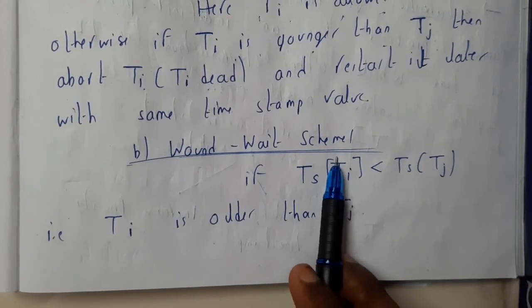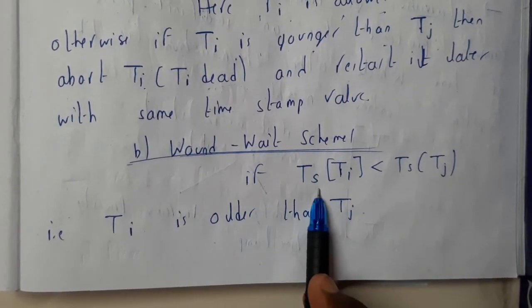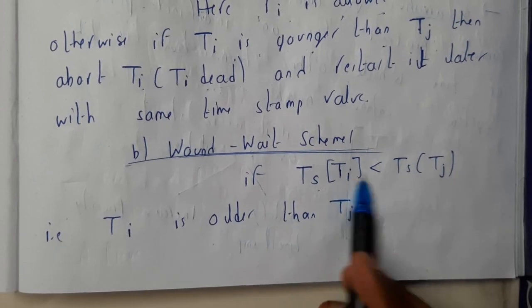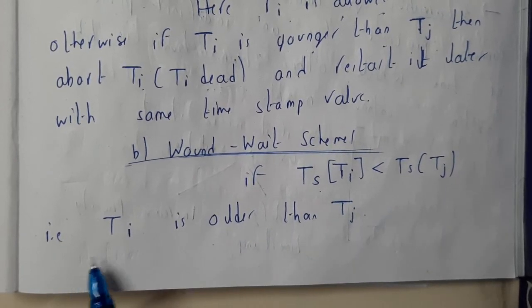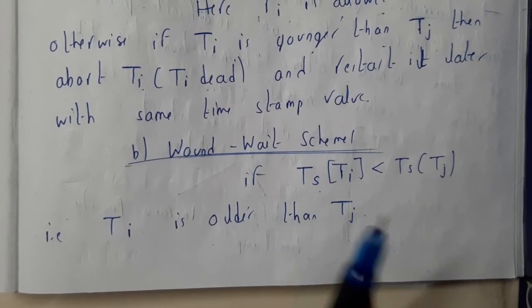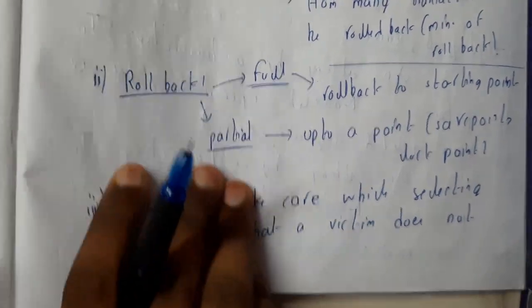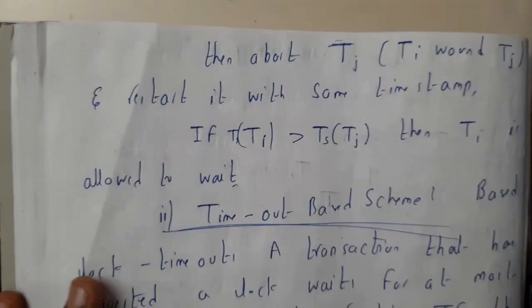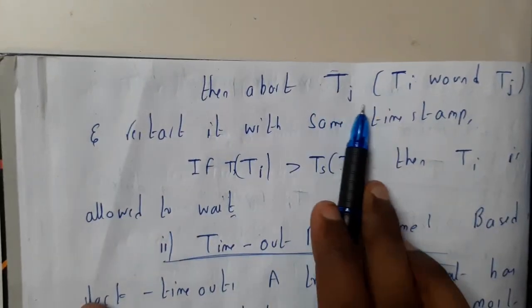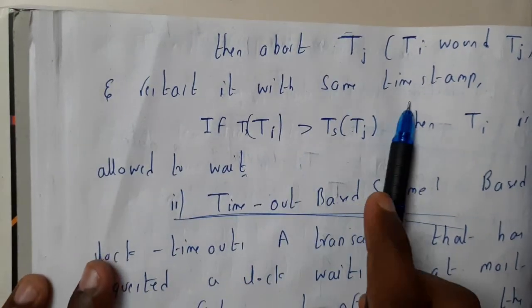We will also use the concept of wound-wait schedule. If timestamp of Ti is less than timestamp of Tj, this is the same condition we used for wait-die scheme. In this scheme, we will be restarting the process. We abort Tj and restart it following the timestamp.